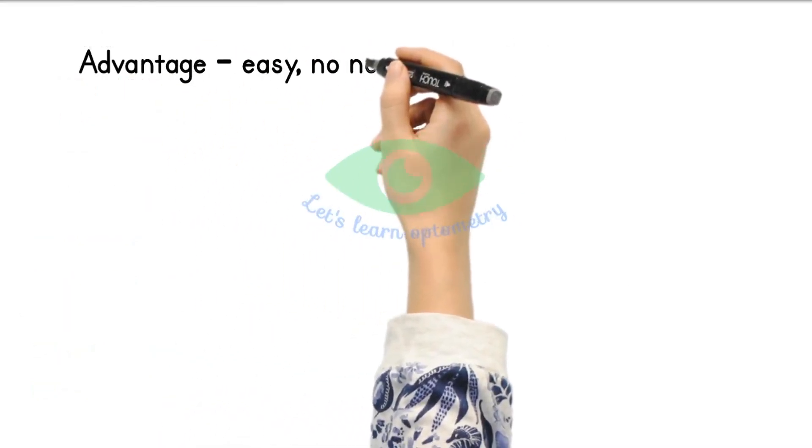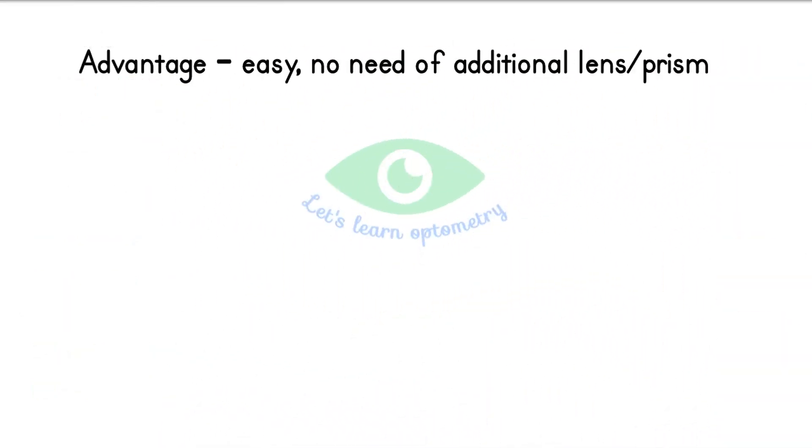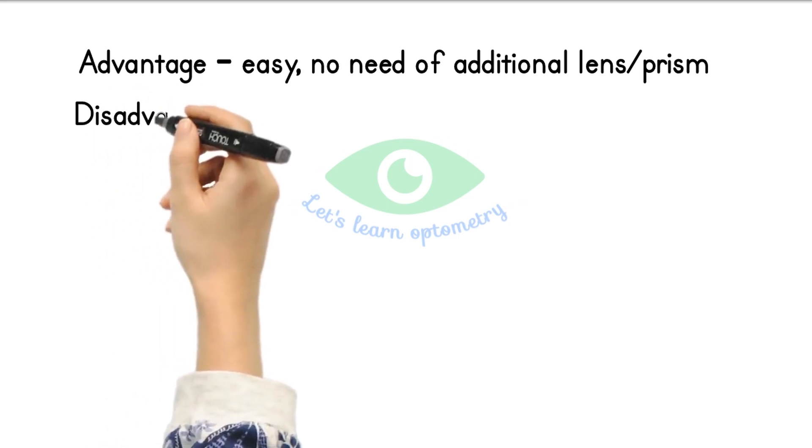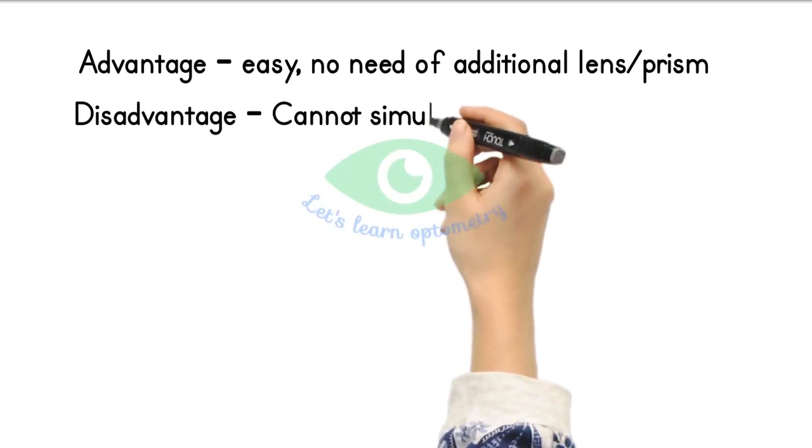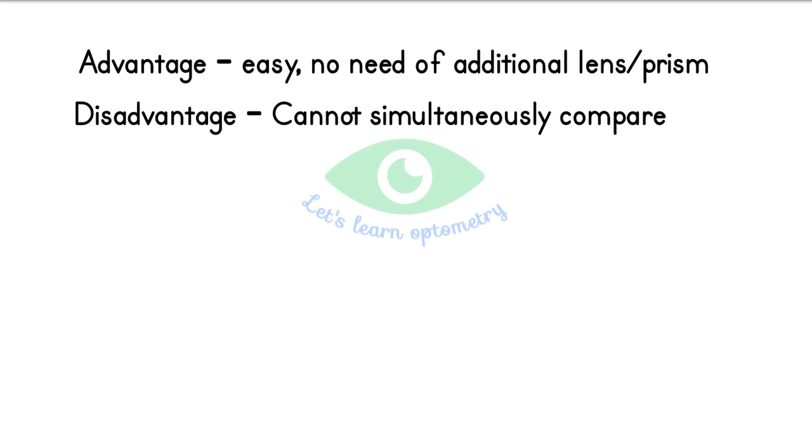The advantage of alternate occlusion test is it is comparatively easier than other methods and does not require many lenses or prisms. But the patient may find it difficult to compare the clarity of two eyes as the images are not shown simultaneously to the patient and they can only compare the clarity by mentally remembering the previous one.